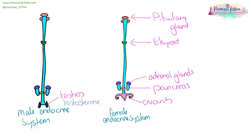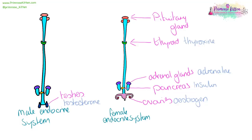The testes produce testosterone, which has the effect of growing muscles, making the genitals grow larger, and increasing the rate of hair growth. Oestrogen is produced in the ovaries and is responsible for the maturation of eggs and the menstrual cycle. The pancreas produces insulin, important for regulating blood glucose levels. The adrenal glands produce adrenaline, important for the fight or flight response. The thyroid produces thyroxine, important in regulating metabolism. The pituitary gland produces follicle stimulating hormone (FSH) and luteinizing hormone (LH).